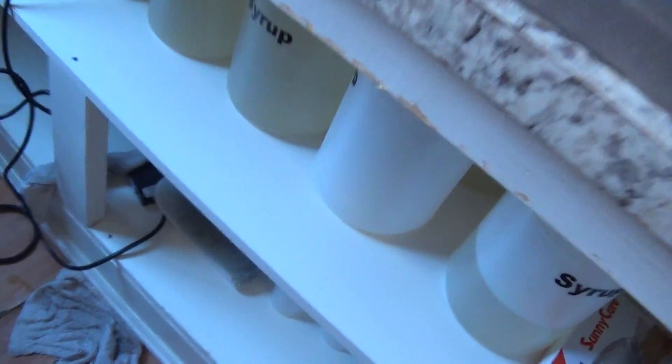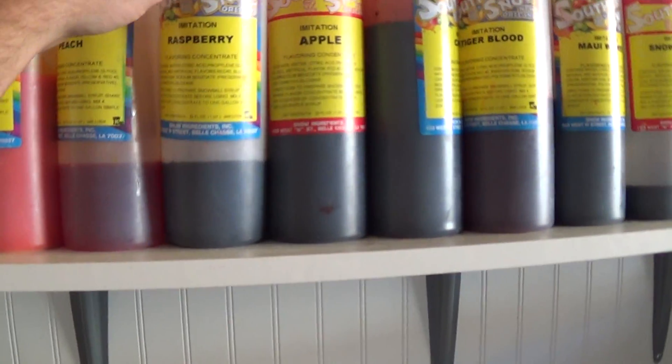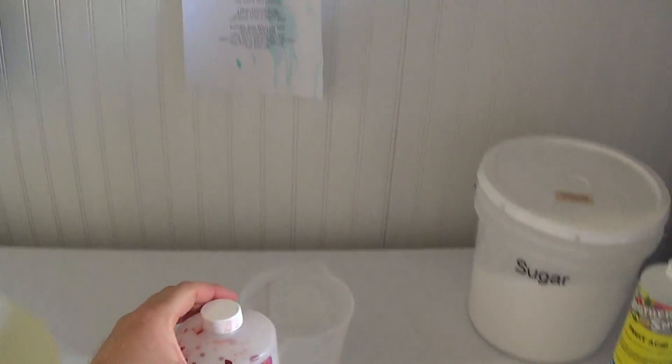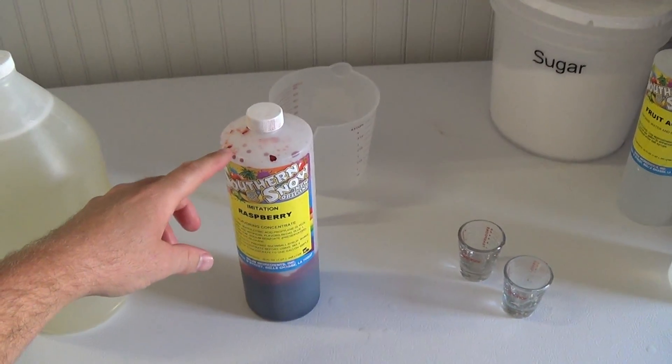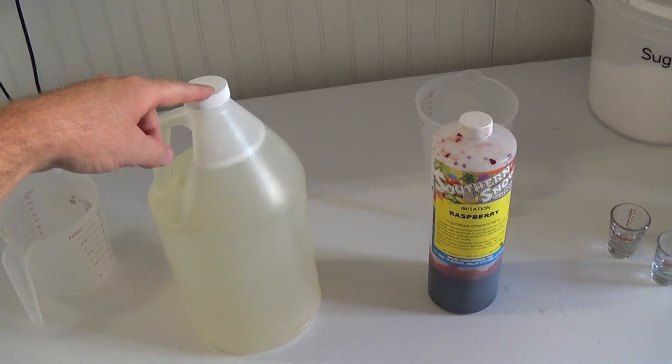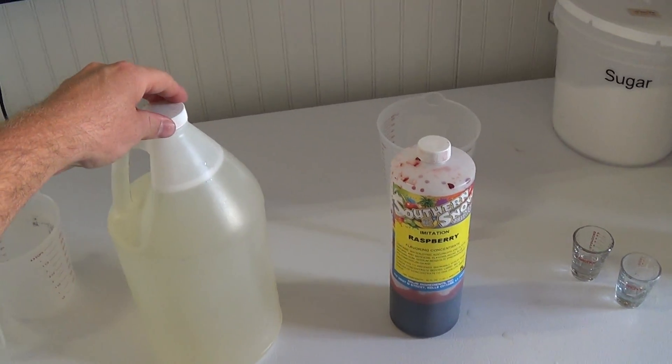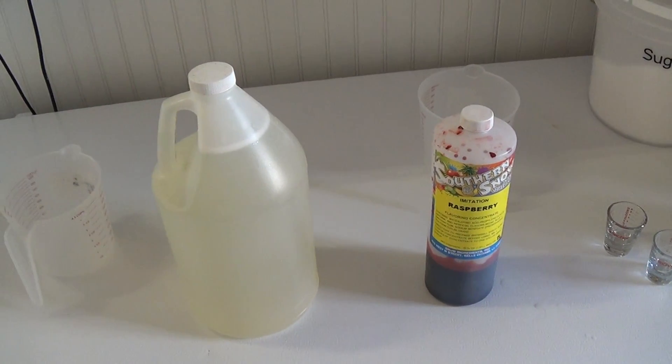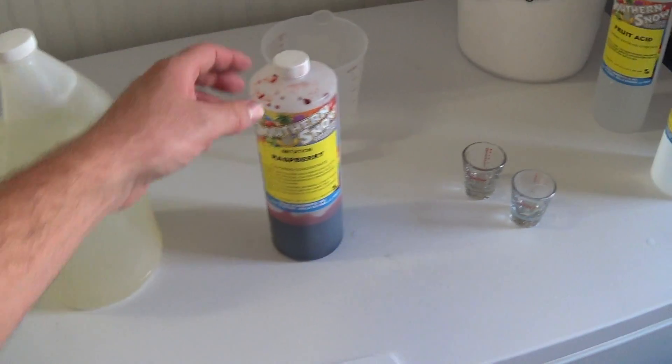Then once you have the simple syrup already made, you can take, I like to get my flavoring from Southern Snow. You take this flavoring, and the sodium benzoate and the citric acid, what it does is it preserves it so that it can sit on the shelf longer and won't grow anything in it or turn bad.